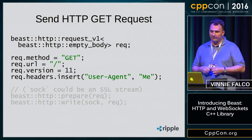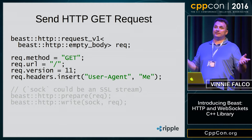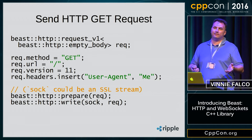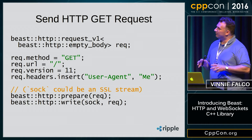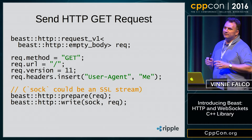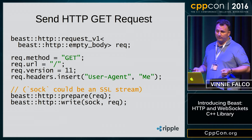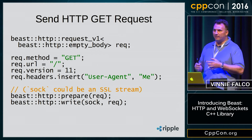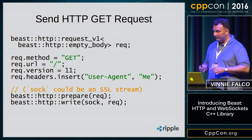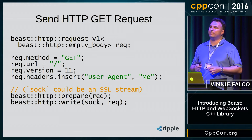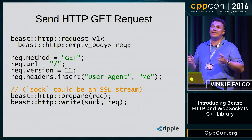Now we have a complete GET request and we want to send it — we call write. There's a function called prepare, which is optional. Prepare is a Beast function that fills in some information for you: it'll set the content length (in this case to zero) and set connection keep-alive or connection-close according to your preferences. You don't have to use it. If you want complete control over the HTTP message, you can have it. This is the low-level library, so it's designed to let you do anything you want.